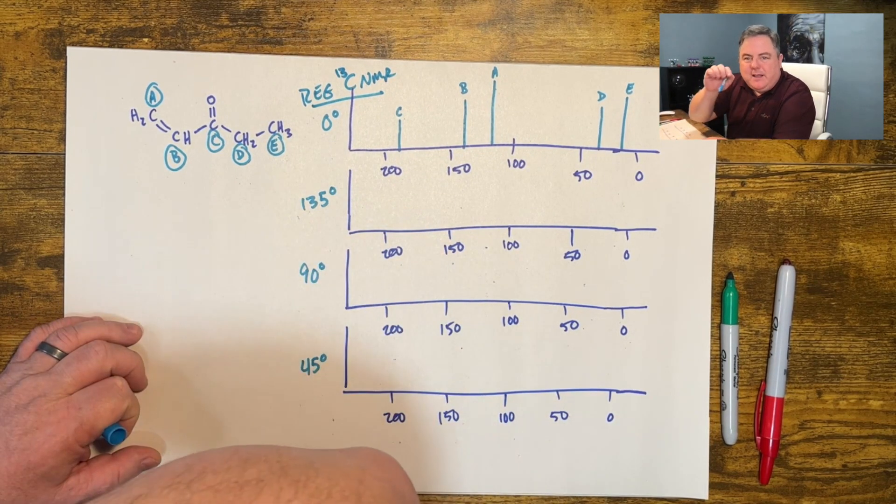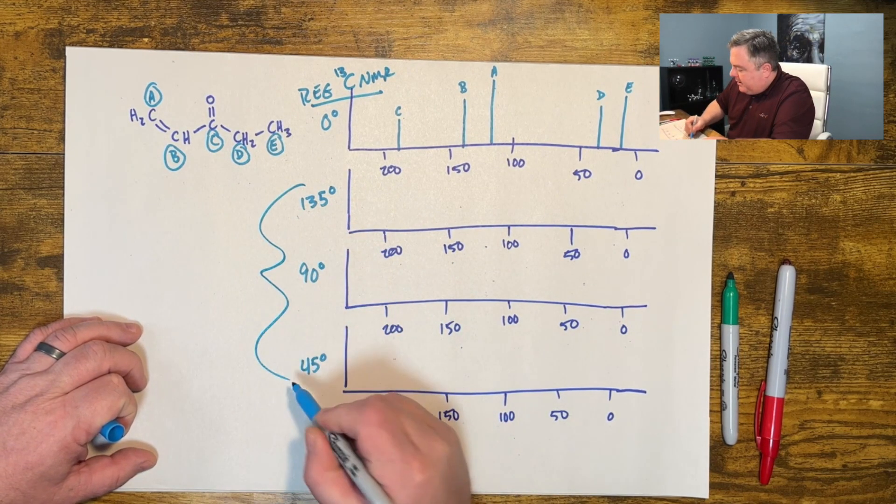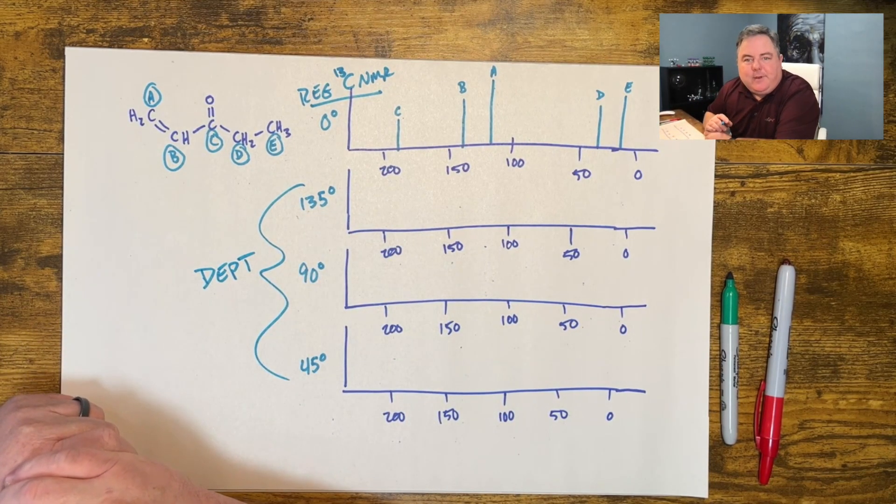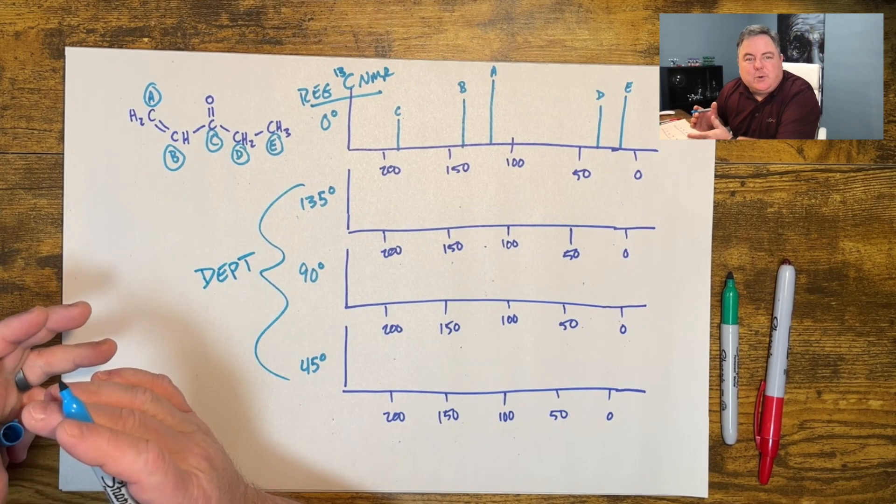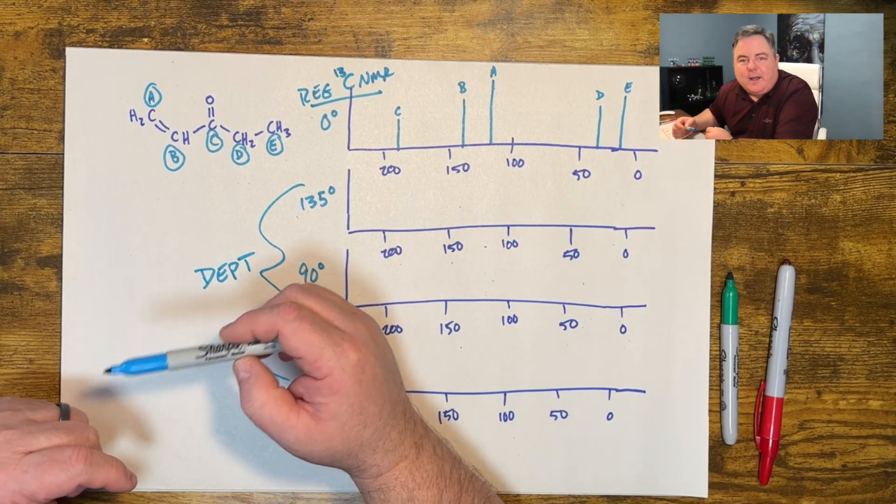Now you can also run what's called the DEPT spectra. It's a special kind of carbon NMR. We run it three more times. In effect, we're looking at it at different angles, starting to look at our peripheral vision of the detector.